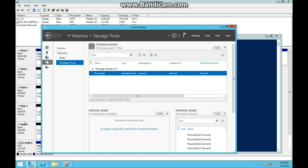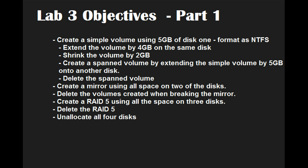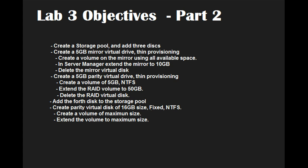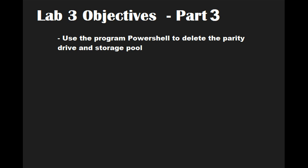And there you go - storage pool and virtual disk are removed. We covered Lab 3 objectives. Part 1: we created simple volumes, we created a mirror, we created a RAID 5. For part 2 objective: we created a storage pool, we created a 5 gigabyte mirror virtual drive, a 5 gigabyte parity virtual drive, we added the fourth disk to the storage pool, we created a parity virtual drive of about 16 gigabytes fixed. And for part 3, we used PowerShell to delete the parity drive and storage pool.